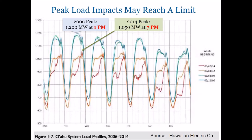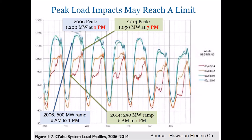So the peak load had gone down a lot, but it is now in a very different hour because solar is meeting so much of the daytime load. In 2006, the utility had to ramp up by over 500 megawatts between 6 a.m. and 1 p.m. By 2014, the ramping requirement from 6 a.m. to 1 p.m. was half as much — 250 megawatts — quite a dramatic reduction in stress for the utility.